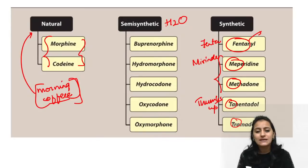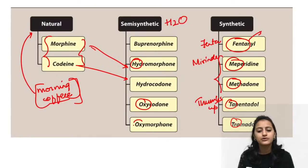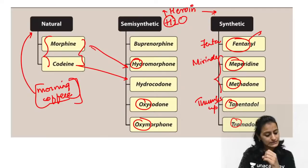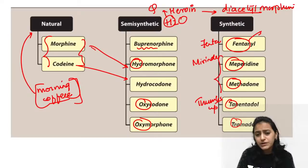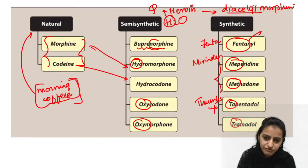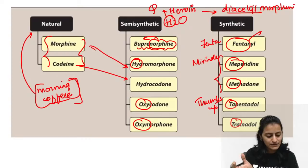In the H₂O mnemonic for semi-synthetic opioids, H also stands for heroin — very important, heroin is semi-synthetic, it is diacetylmorphine. Buprenorphine is also semi-synthetic. Morphine modified by adding a chemical group becomes semi-synthetic. Remember: codeine with hydro added becomes hydrocodone. Buprenorphine is like adding a 'bupren' prefix to morphine — making it semi-synthetic.